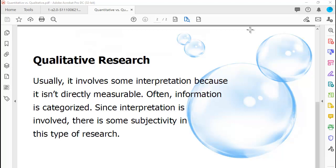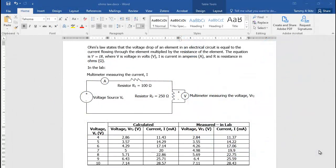I will provide an example of each. First, let's look at a quantitative study. Let's say I want to prove that Ohm's Law is really true. Ohm's Law states that the voltage drop of an element in an electrical circuit is equal to the current flowing through the element multiplied by the resistance of the element. The equation is V equals I times R, where V is voltage in volts, I is current in amperes, R is resistance in ohms, and the symbol for ohms is the uppercase omega.